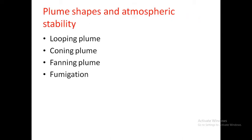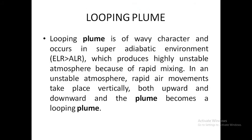We are going to discuss flume shape and atmospheric stability. There are four types of flume shapes: looping flume, coning flume, fanning flume, and fumigation. First — looping flume: it has a wavy character and occurs in a super-adiabatic environment, where environmental lapse rate is greater than adiabatic lapse rate, which produces a highly unstable atmosphere.